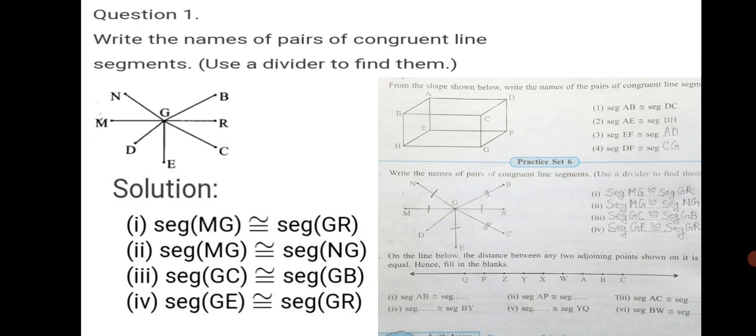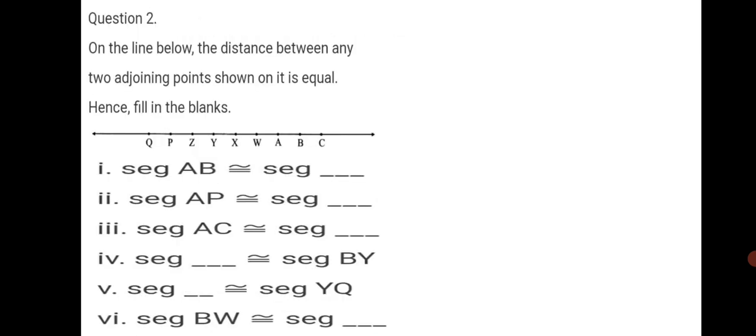Now, let's move on to question number 2. On the line below, the distance between any 2 adjoining points shown on it is equal. On the line below, the distance between any 2 adjoining points shown on it is equal. That means, between Q and P, there is equal distance. Between P and Z, Z and Y - equal distance. Hence we have to fill in the blanks.